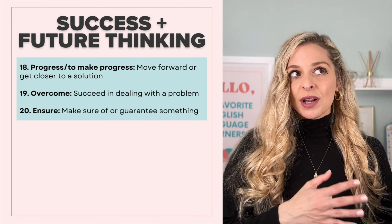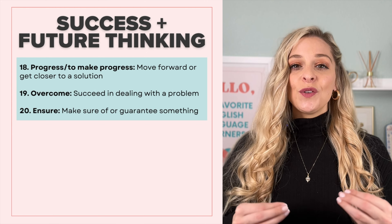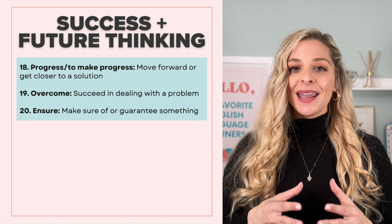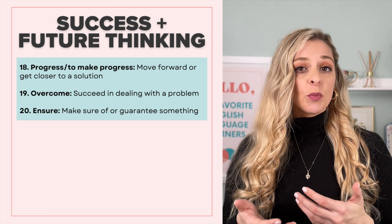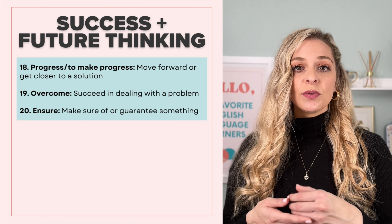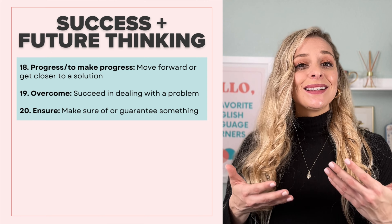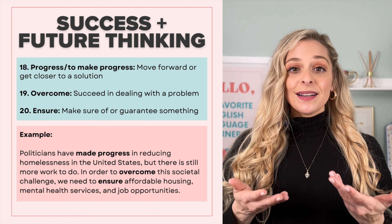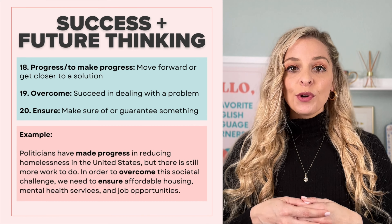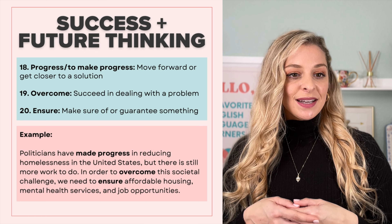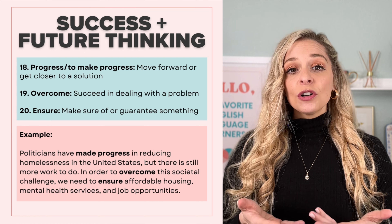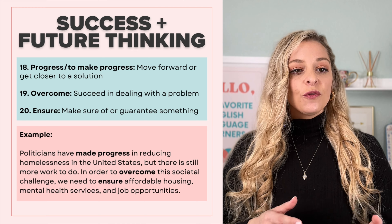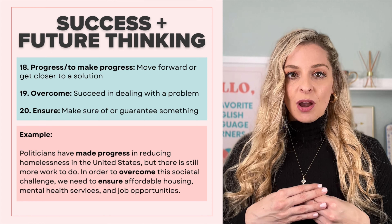Now that we've talked about addressing problems, let's talk about success and future thinking. Here we have the verbs to progress or to make progress, to overcome, and to ensure. The verb progress or to make progress means to move forward or closer to a solution. To overcome means to succeed in dealing with a problem. And to ensure means to make sure or guarantee something. So in an example, we can say: 'Politicians have made progress in reducing homelessness in the United States, but there is still more work to do. In order to overcome this societal challenge, we need to ensure affordable housing, mental health services, and job opportunities.'